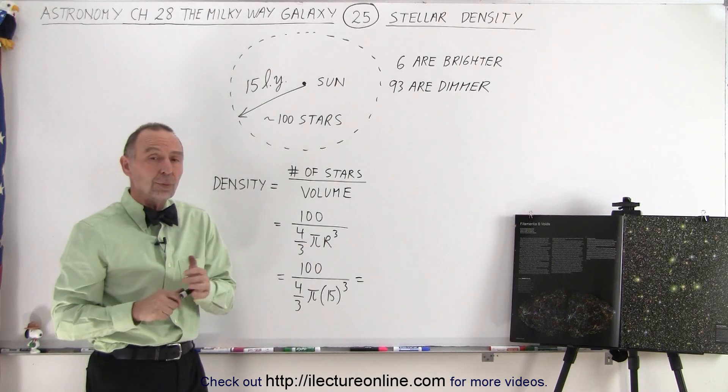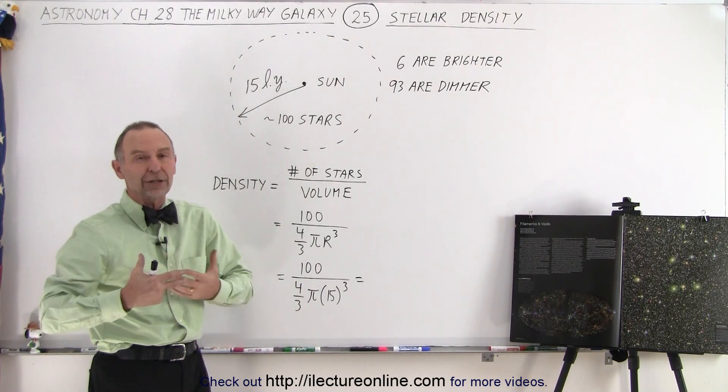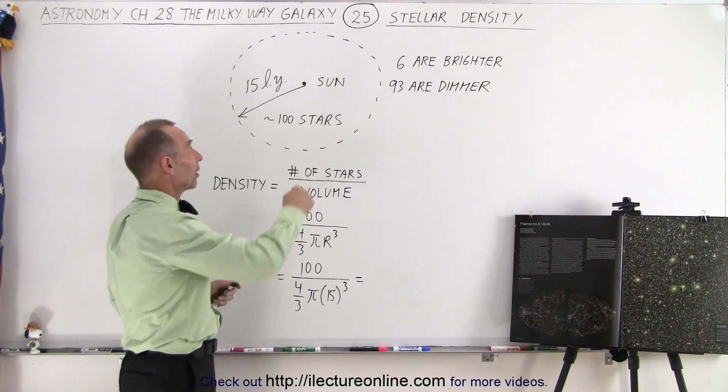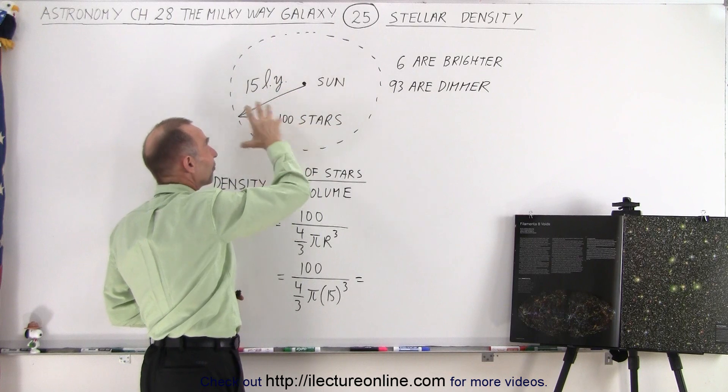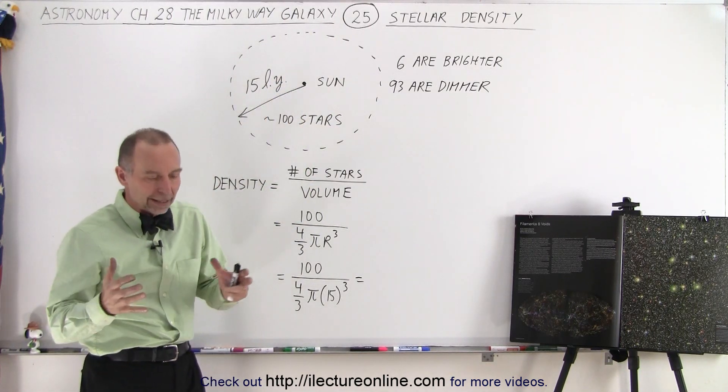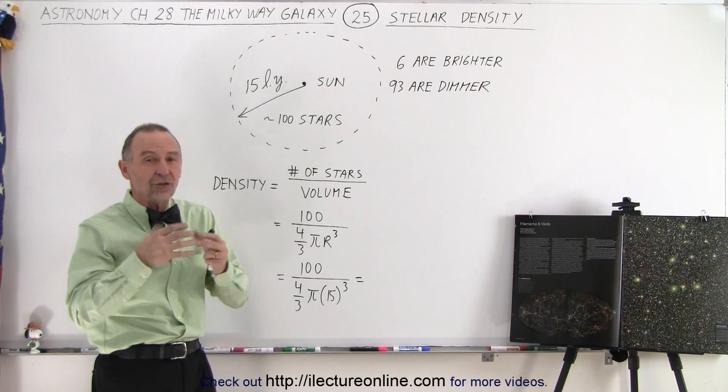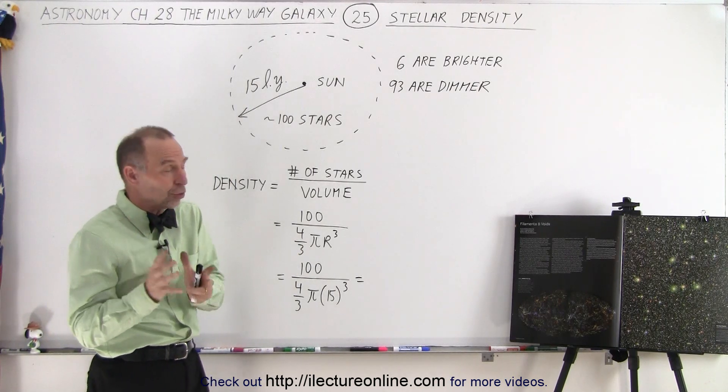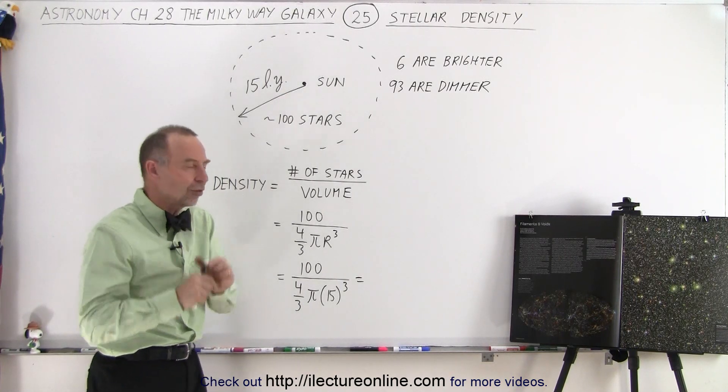Well, one thing we can do is figure out how dense the stars are where we live near our sun. And so if we take our sun at the center and then we draw a circle of a radius of 15 light years, because that's what Hertzsprung and Russell did. They took the sun and then they tried to figure out the distance of the stars nearby our sun, and they were able to use the parallax method to find the distance of these stars.